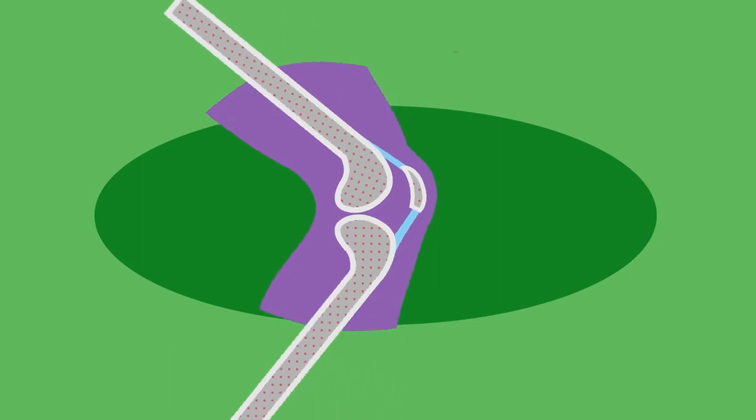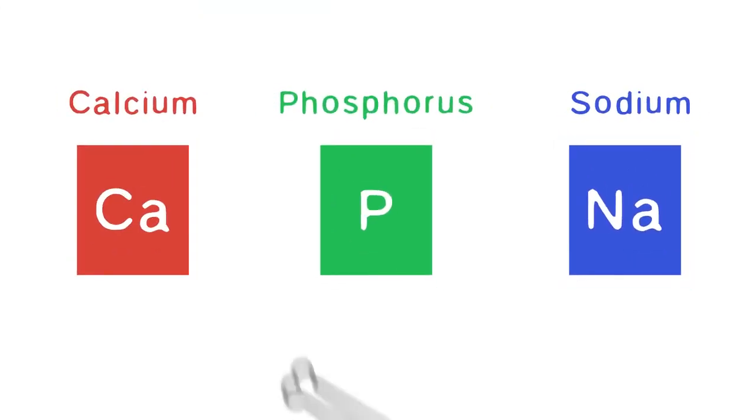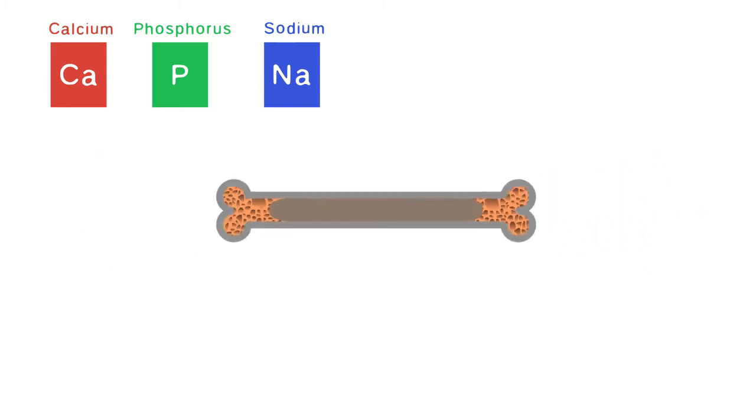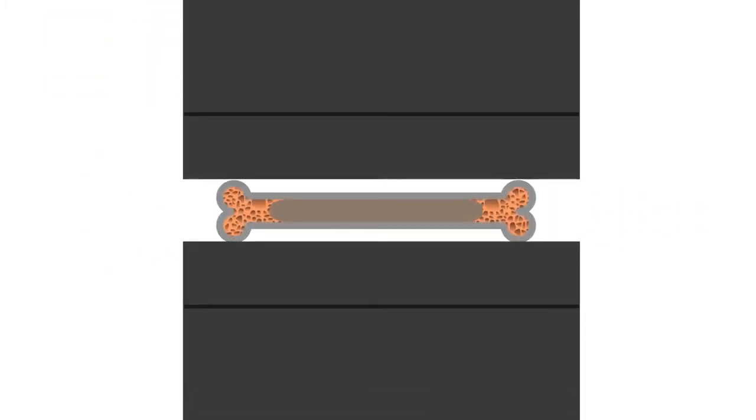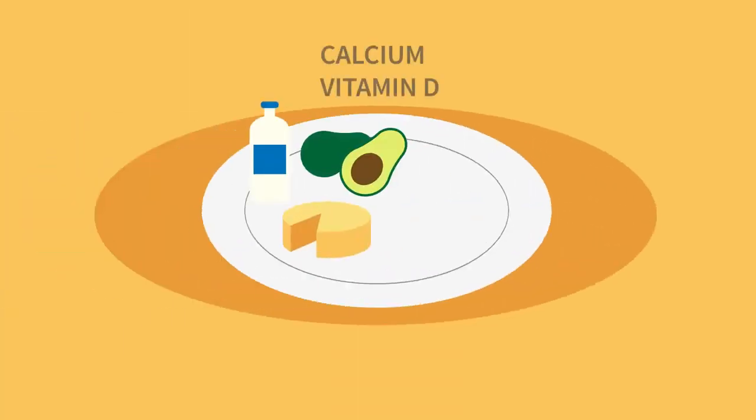Bones are made up of many different materials including calcium, phosphorus, and sodium. Inside they have a honeycomb-like structure which makes them light yet very strong. Eat a diet full of calcium and vitamin D, especially when you're growing up, in order to have a healthy, strong skeleton.